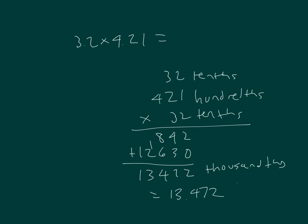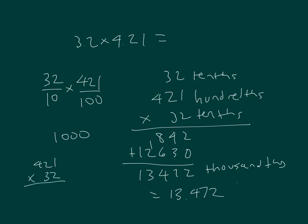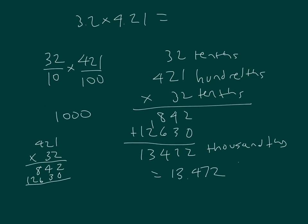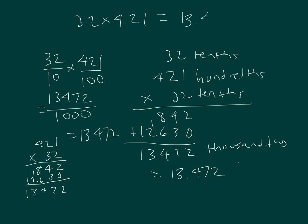With our fractions, that would be 32 tenths times 421 hundredths. Tenths times hundredths is thousandths. And then I have 421 times 32 again, giving 13,472 thousandths, which equals 13.472. So that is my answer.